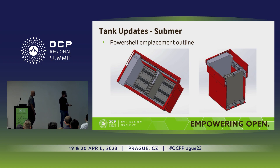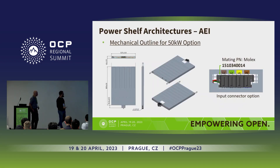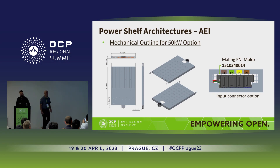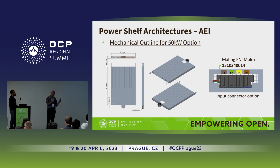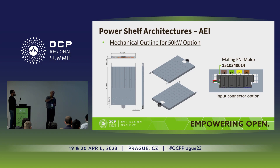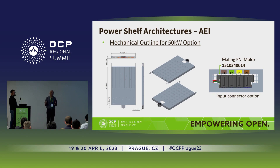I'm handing over to Harry, who will explain in more detail the power shelf, bus bar, and connectors for distributing power within the tank. Thank you, Oriel. As you probably know, we've talked about power distribution in immersion. Many of you are familiar with ORv3 — the specification for the power shelf. Looking at ORv3, it's a 1U system giving you up to 18 kilowatts of power: a 3-kilowatt power module times six gives you 18 kilowatts with N+1 redundancy. We're seeing power requirements going exponentially up, driven by AI workloads and others.